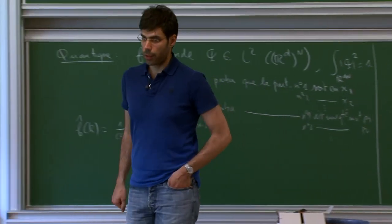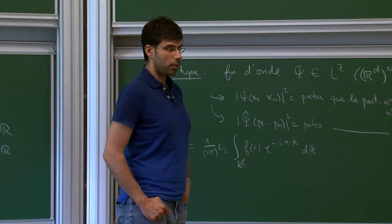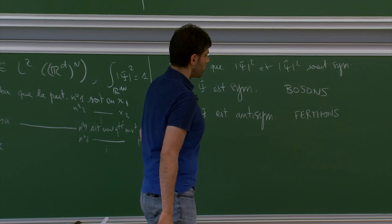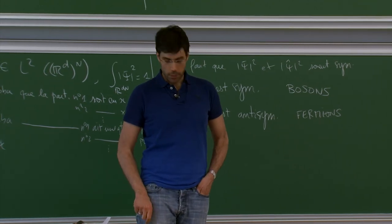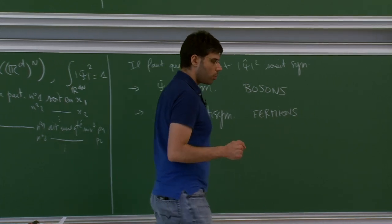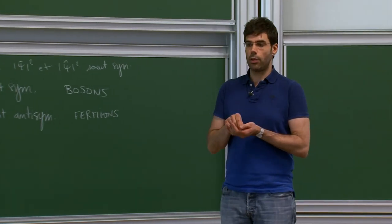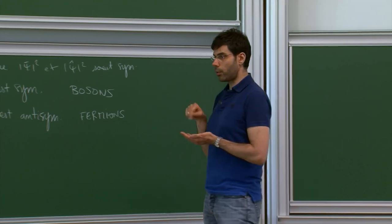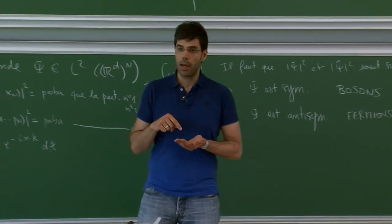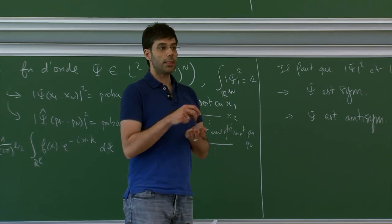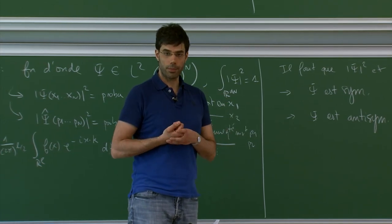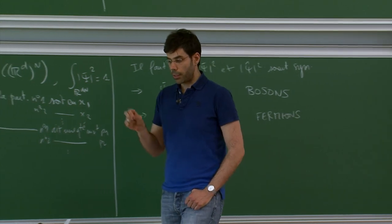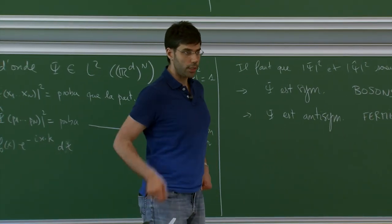Or we suppose that ψ is antisymmetric — that is, if you exchange the order of the variables, you get the sign of the permutation, which of course does not show up in the square. In that case, it describes particles called fermions. In the world, there are really both kinds of particles. Examples of fermions: electrons, protons, quarks. Examples of bosons: photons. For composite particles composed of several elementary particles, you count the number of elementary particles inside: an even number of fermions gives a boson, an odd number gives a fermion.